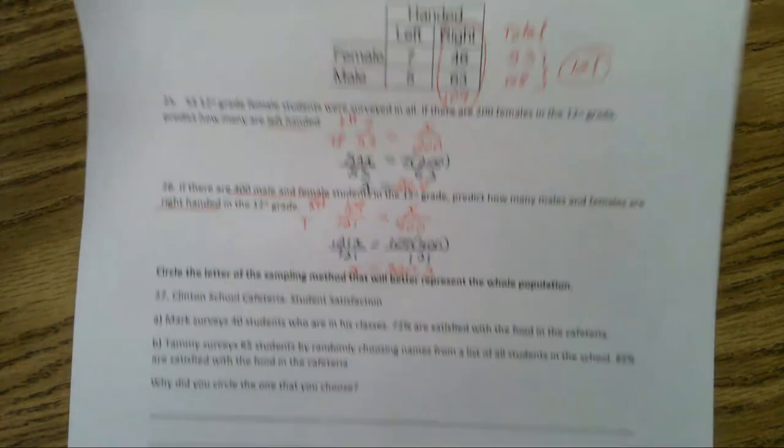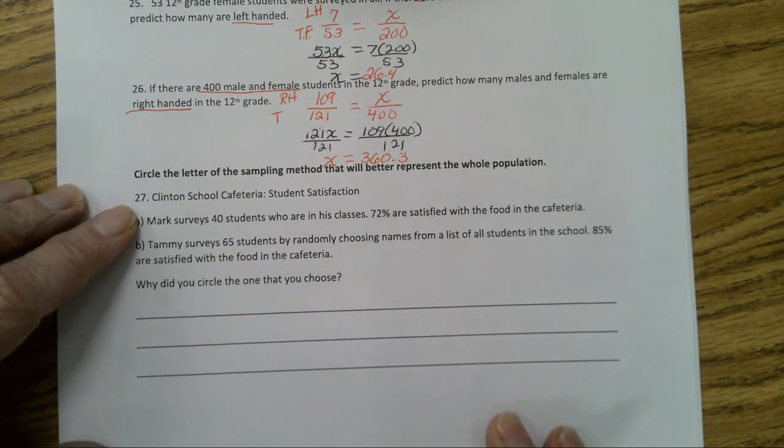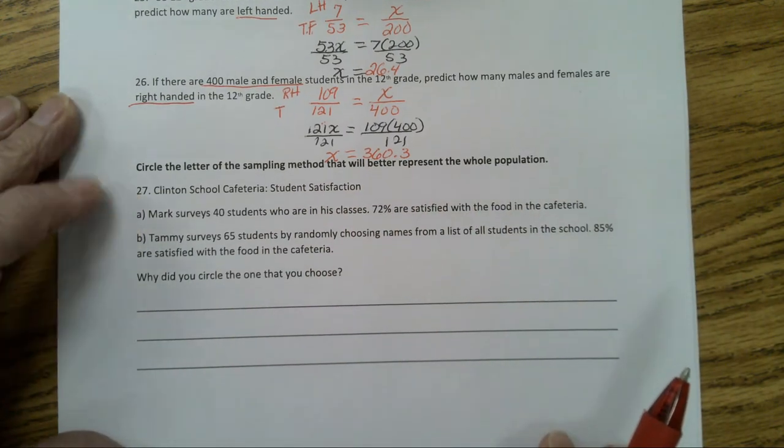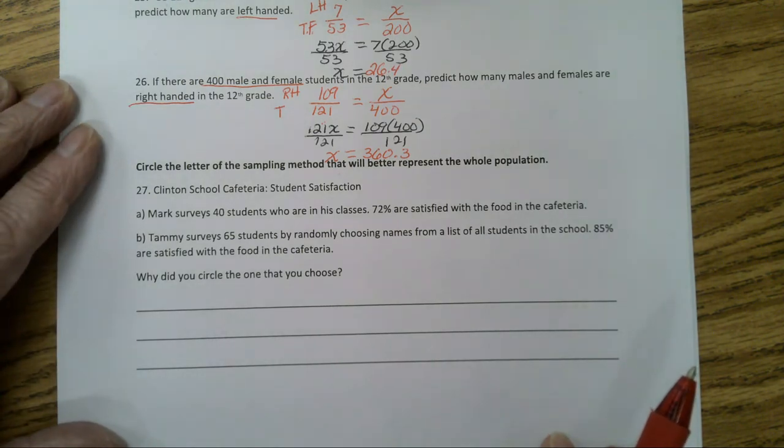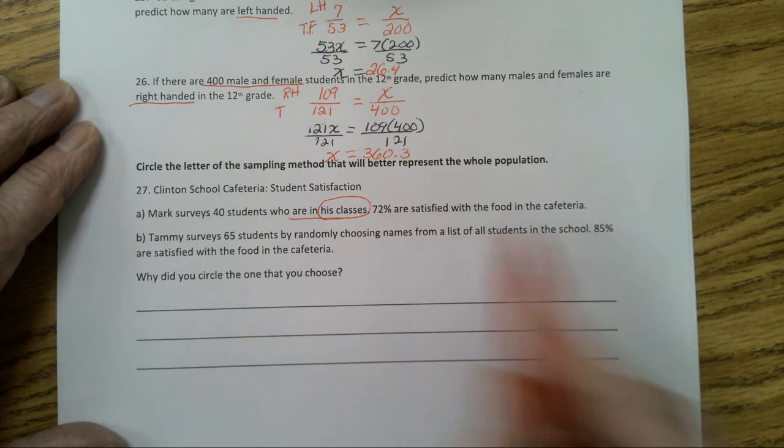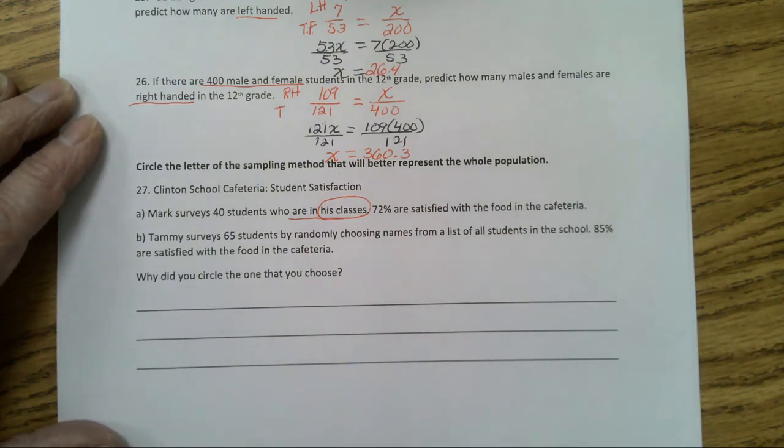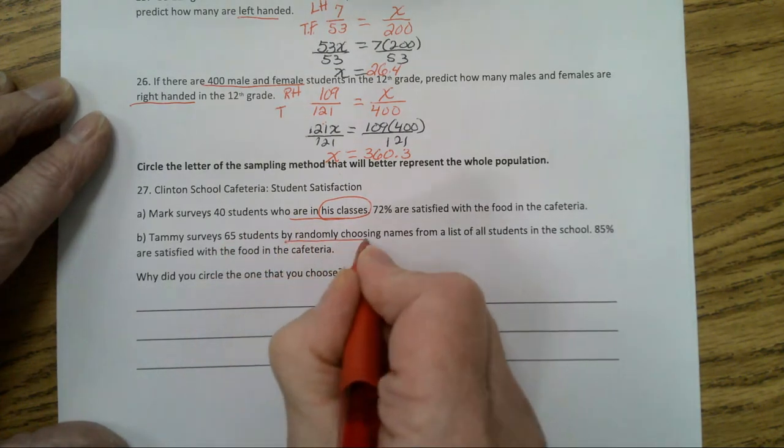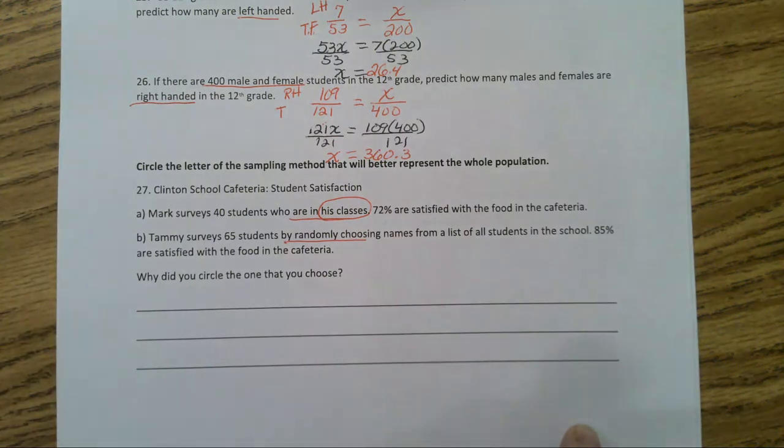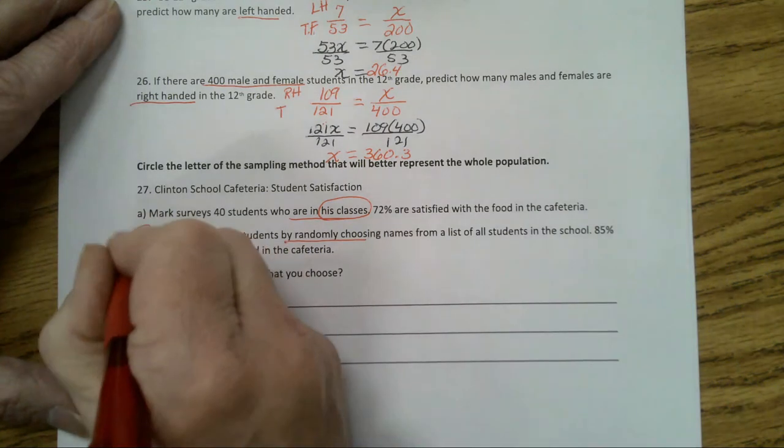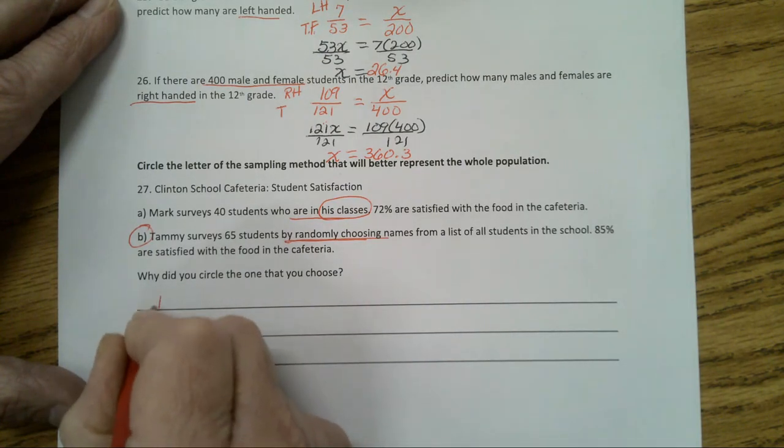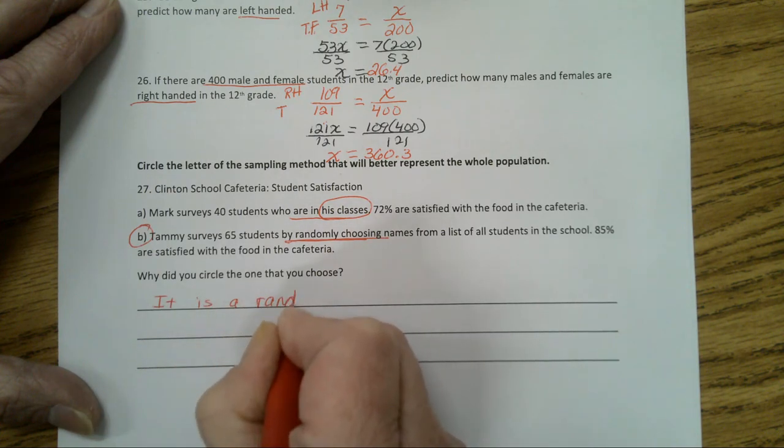Okay, we're almost finished. We're now on problem number 27. It says Clinton School Cafeteria Student Satisfaction. Circle the letter of the sampling method that will better represent the whole population. Is it going to be A or B? Well, let's find out. Mark surveys 40 students who are in his classes. 72% are satisfied with the food in the cafeteria. Let's look at the next one. Tammy surveys 65 students randomly choosing names from a list of all students in the school. 85% are satisfied with the food in the cafeteria. Alright, you're going to choose B. Why? It is a random survey. So why did you circle the one you chose? It is a random survey.